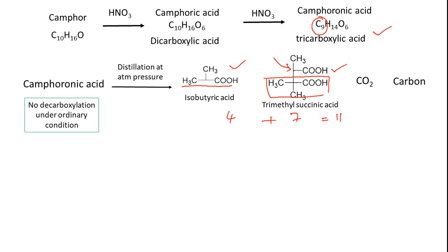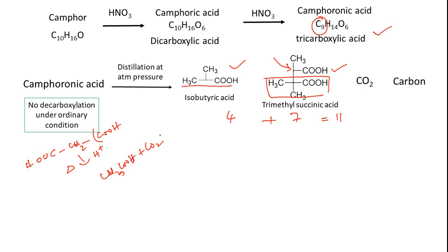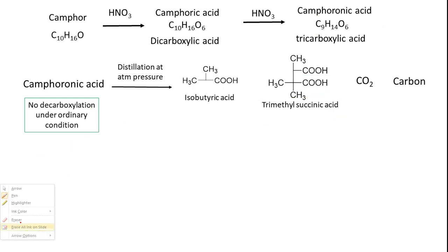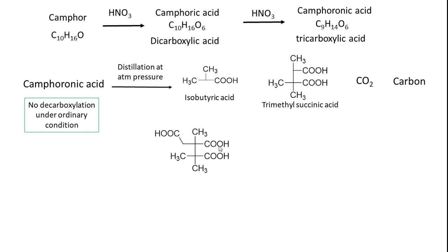Scientists also observed that camphoronic acid did not decarboxylate under ordinary conditions. Normally, if you have a structure with COOH-CH2-COOH (a malonic acid-type arrangement), warming in acidic conditions can remove one carboxylic acid. But camphoronic acid did not decarboxylate, meaning the carboxylic acids are not on adjacent (alpha) carbons — all three carboxylic acids are present on different carbons. Based on these observations, scientists proposed a structure for camphoronic acid.